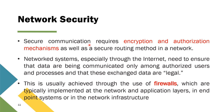When using an IoT system, we need a network, so we require network security. Without it, your system can easily be interrupted by external attacks. Secure communication requires encryption and authorization mechanisms as well as secure routing methods in a network. Network systems, especially through the internet, need to ensure that data is communicated only among authorized users and processes, and that exchanged data is legitimate.